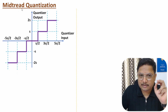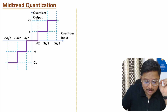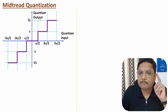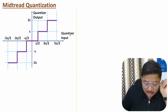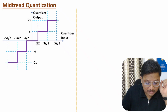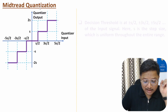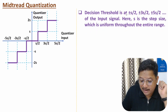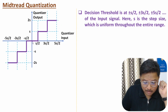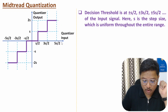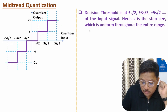One more thing to understand: the decision thresholds are taken with respect to input. In mid-tread quantization, decision thresholds are at plus or minus s/2, plus or minus 3s/2, plus or minus 5s/2, and so on. Here s is the step size, which is uniform throughout the entire range.